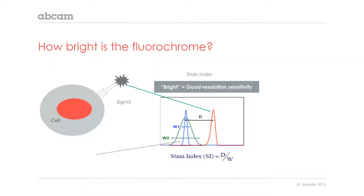The stain index is depicted by the signal from the cell, which is depicted by the positive peak, but it's also depicted by the width of the autofluorescence. The stain index is the distance from the negative to the positive divided by the width or standard deviation of the negative population. The standard deviation is very important because, if we take a narrow peak, the distance from the positive to this narrow peak is far greater than if you have a highly autofluorescent cell, such as mesenchymal stem cells or embryonic stem cells, as opposed to lymphocytes. So the stain index will vary from cell type to cell type, as well as from instrument to instrument.